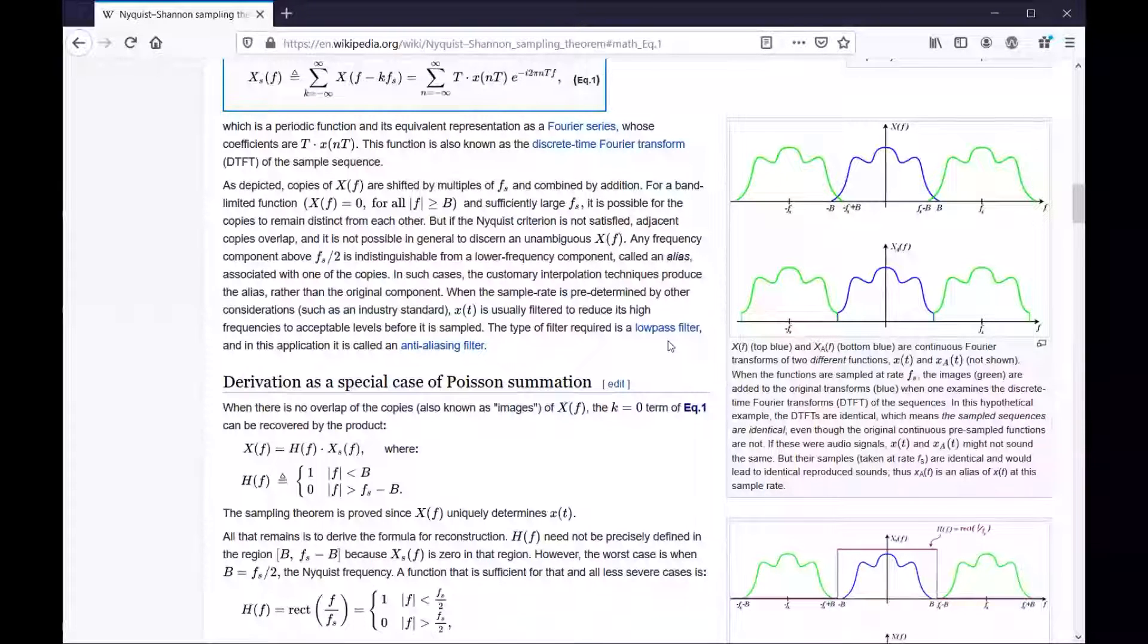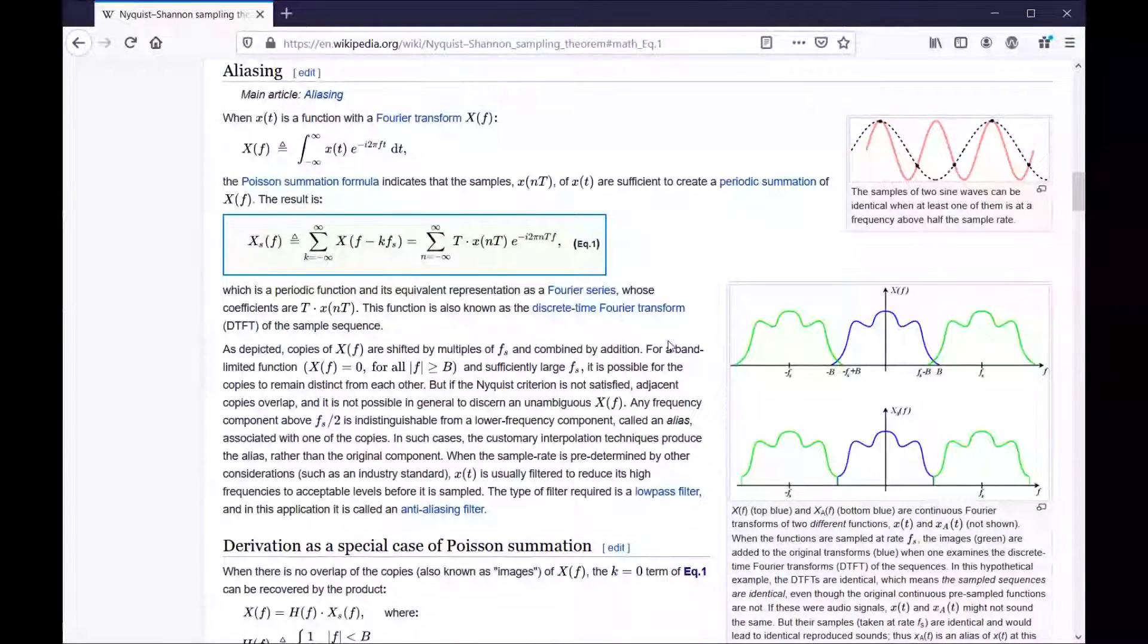So that's a little beyond the scope of this video but now that we've looked at equation one, and by the way I just jumped to equation one without looking at the context of it. If I wanted to do that I could use my heading level navigation to see what section of the article equation one is in. It's in aliasing, okay. So this is an example of how all of these universal design things can work together to provide a good unified user experience to someone reading an article. So if I wanted to I could start reading this section about aliasing: the samples of two sine waves can be identical when at least one of them is at a frequency above the sample rate. When x of t is a function with a Fourier transform x of f, and by the way the x of t is coded as math so if you wanted to you could navigate to it.